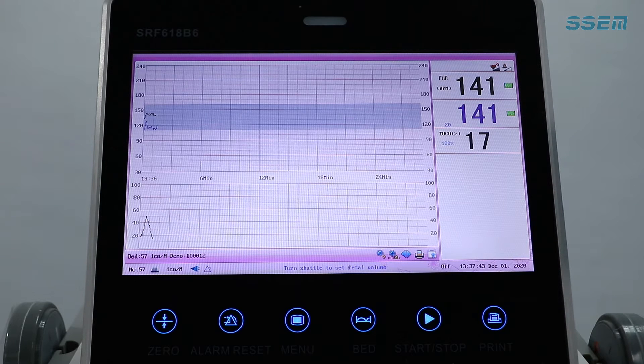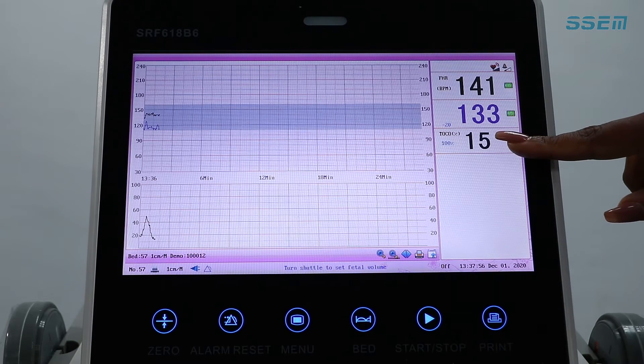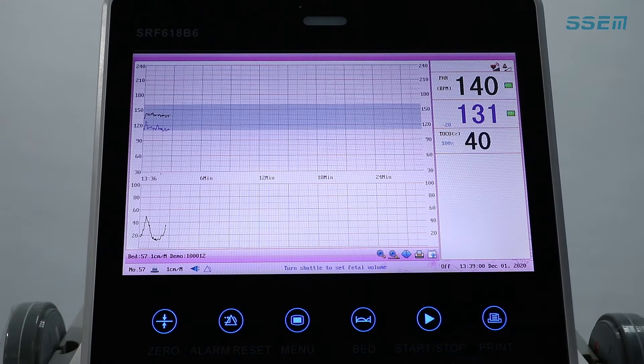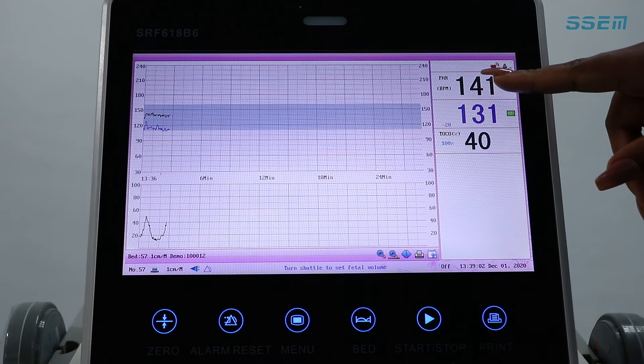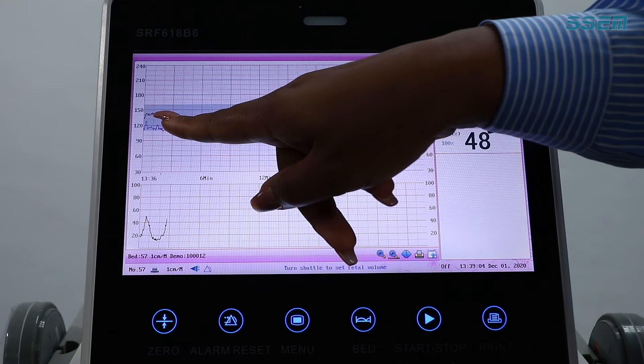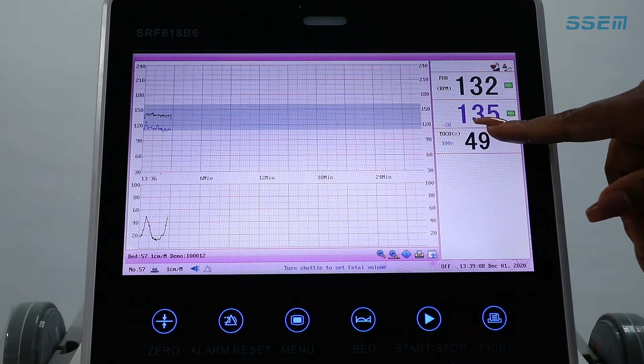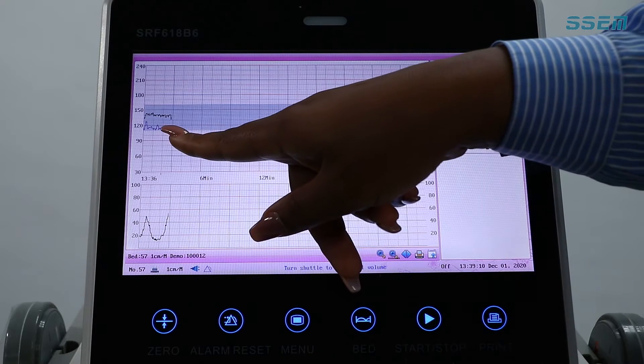Increase the volume to hear the audio of the fetal heart rates FHR once good contact has been achieved. The Toco and the FHR numeric values will display here. FHR 1 is black and it will display on your tracing as black. FHR 2 is purple and it will display as purple.